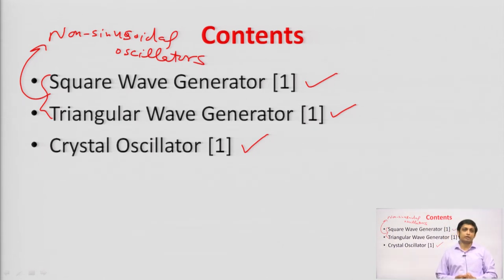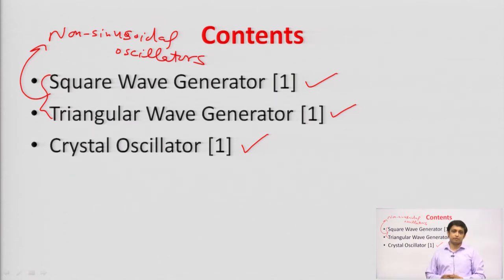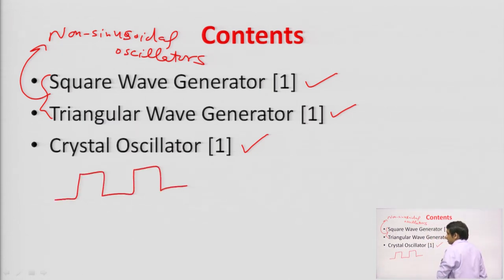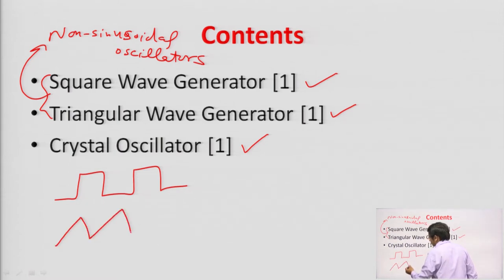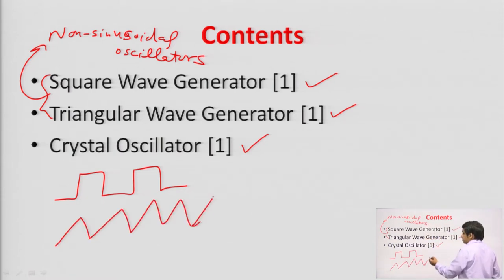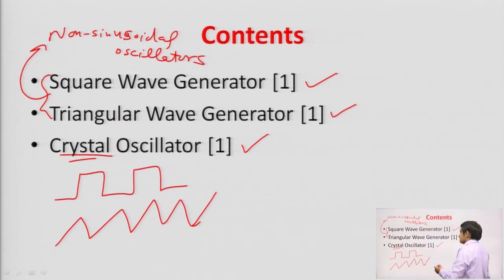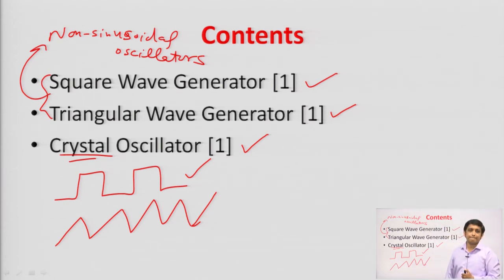Now, in non-sinusoidal oscillators — as the name suggests, non-sinusoidal means other than sine wave — we will understand how we can generate a square wave and how we can generate a triangular wave. This square wave is very much required especially in digital circuits, in microprocessor controllers.